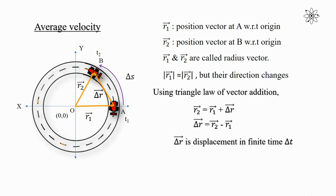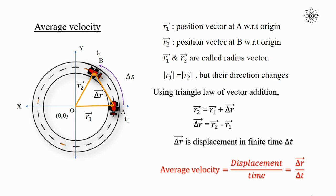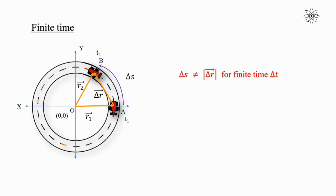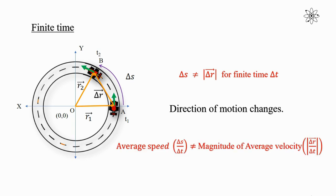Vector delta r is the displacement in finite time delta t. From this, the average velocity of the car equals displacement divided by time, which is equal to vector delta r divided by delta t. For a finite time interval, distance is not equal to the magnitude of displacement because the direction of motion changes. Therefore, average speed is not equal to the magnitude of average velocity.